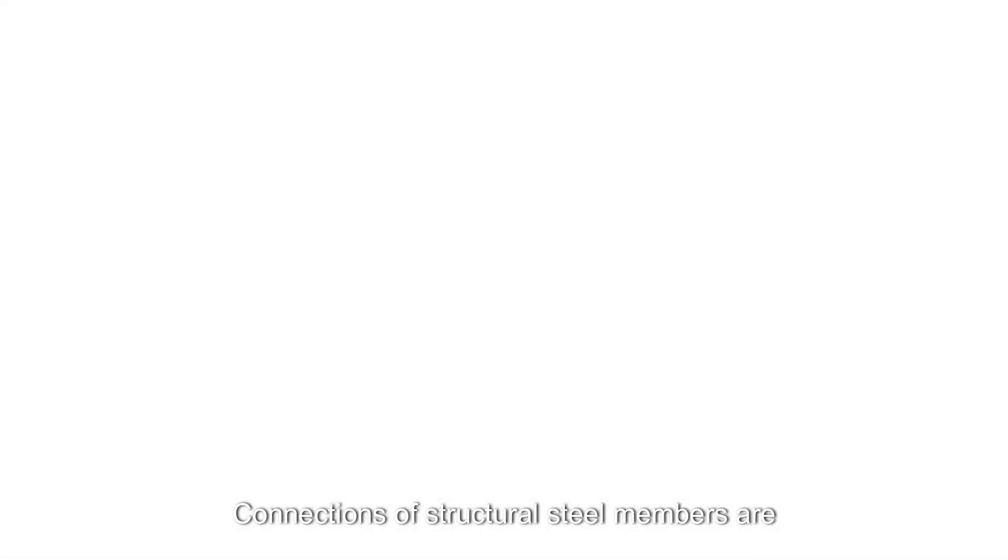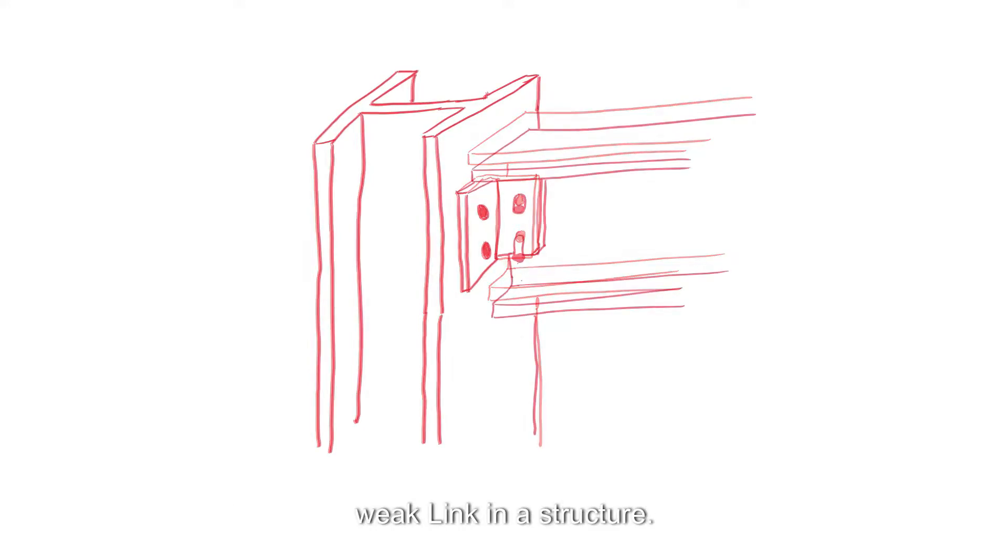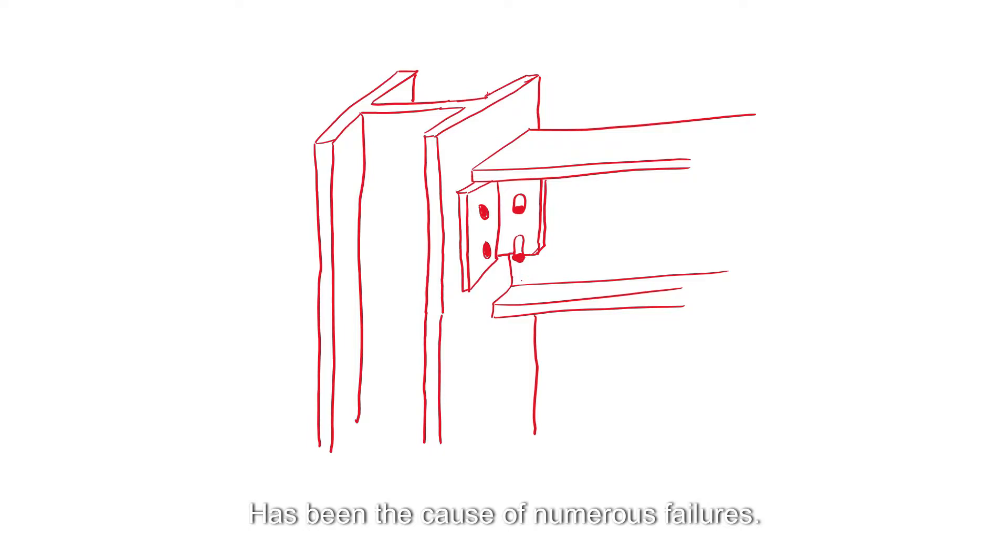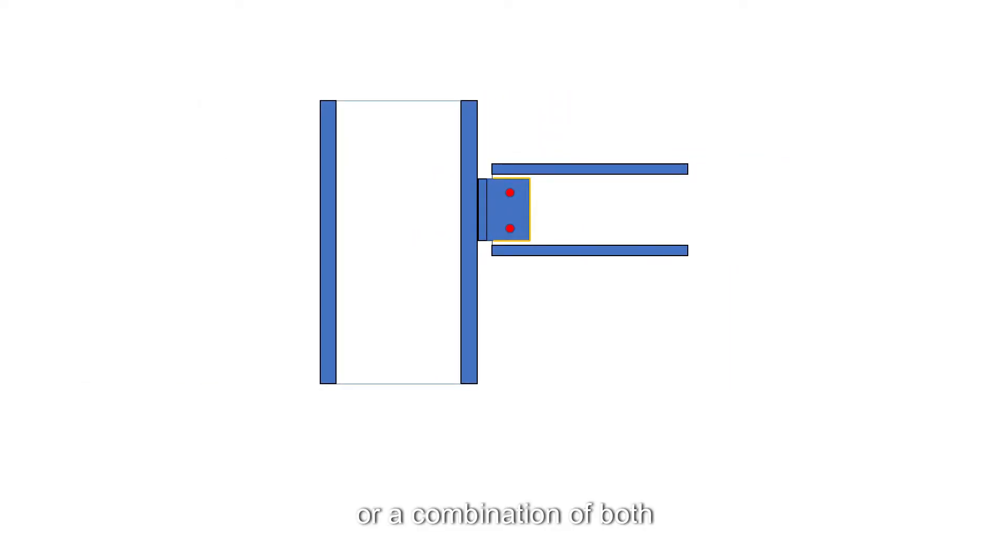Connections of structural steel members are of critical importance. An inadequate connection, which can be the weak link in a structure, has been the cause of numerous failures. Modern steel structures are connected by either welding or bolting, or a combination of both.